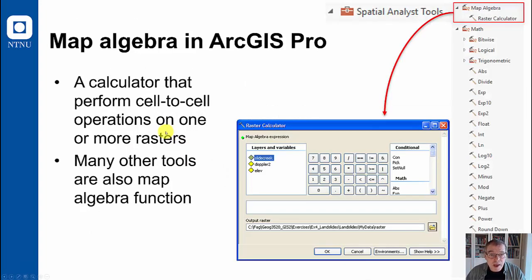If you are using ArcGIS Pro, map algebra can be accessed through the tool called raster calculator, but there are many other tools. For instance, most of the tools you find under the math folder in the spatial analyze tools are actually map algebra functions.